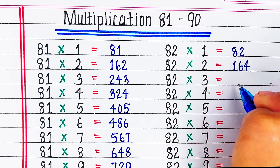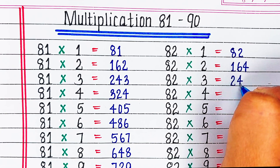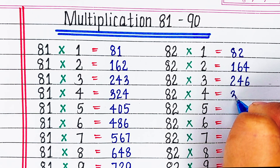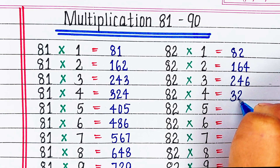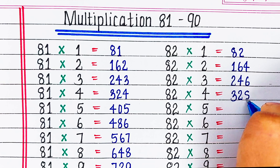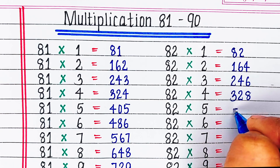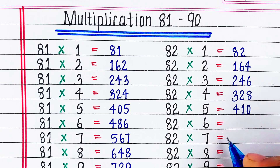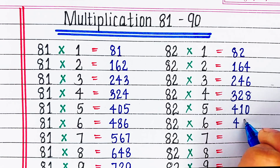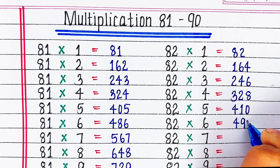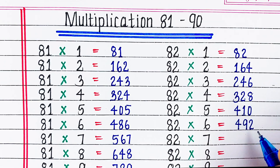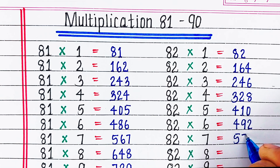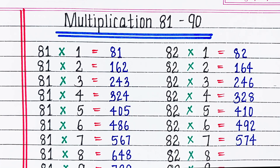Next is table of 82. 82 1s are 82, 82 2s are 164, 82 3s are 246, 82 4s are 328, 82 5s are 410.